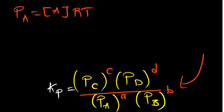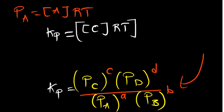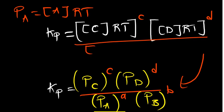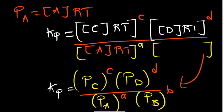So Kp is equal to: on the numerator, the concentration of C times RT, all raised to the power c, multiplied by the concentration of D times RT, raised to the power d. On the denominator, we have the concentration of A times RT raised to the power a, multiplied by the concentration of B times RT, raised to the power b. This all comes from substituting the ideal gas law into the Kp expression.